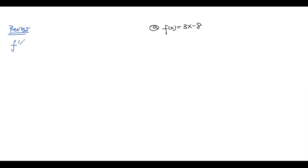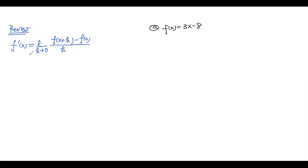The first one: if you want to find f′(x), you use this notation — it's the limit as h approaches zero of [f(x+h) − f(x)] / h. This is the formula you use to find the general form of the derivative.